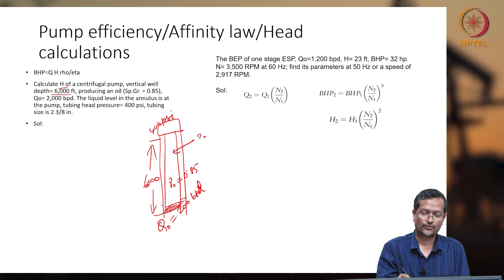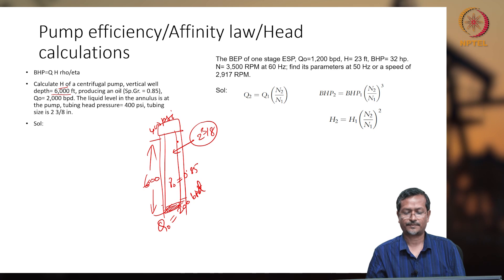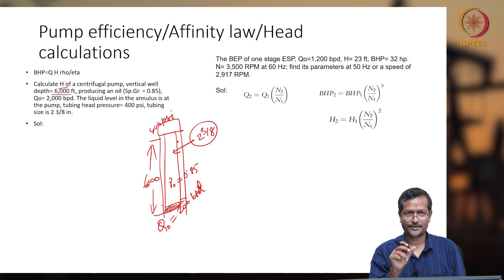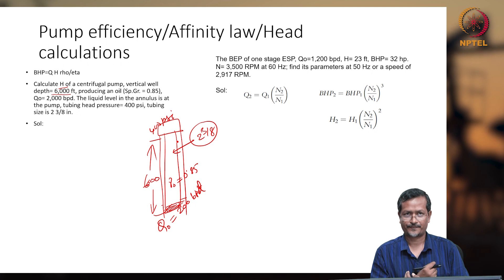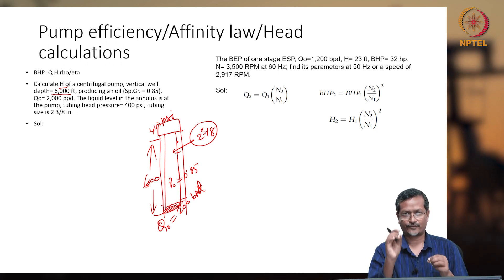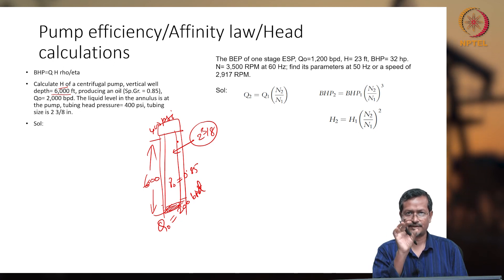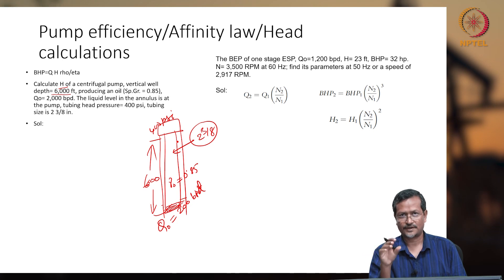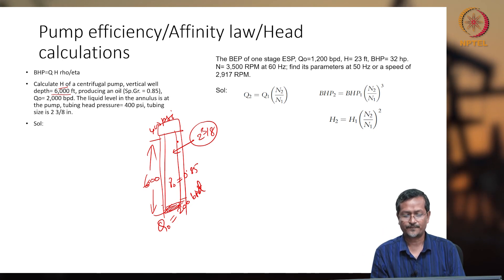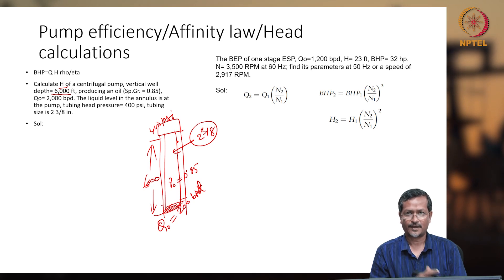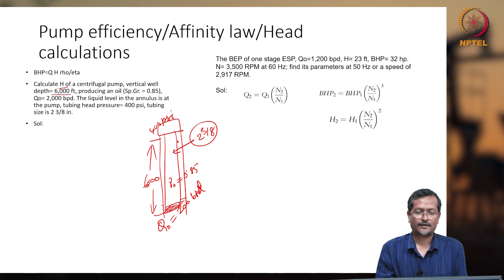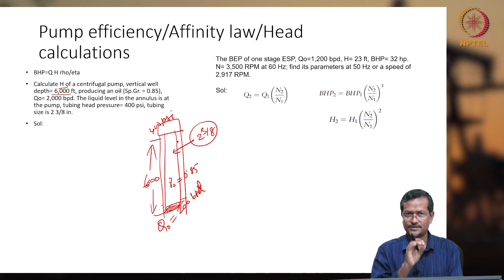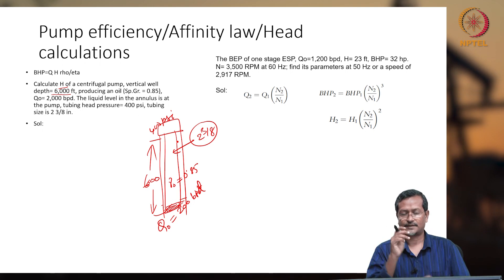Tubing size is given as 2 and 3/8 inch. Normally tubing size is specified by API (American Petroleum Institute), so the sizes will be like 2 and 3/8 inch, 2 and 5/8 inch, 3 and 1/2 inch — specified in inches. If you see the API chart, centimeter and millimeter values are also given. Normally tubing size is given by outer diameter, and you have to find the inner diameter from the table.